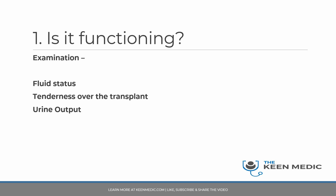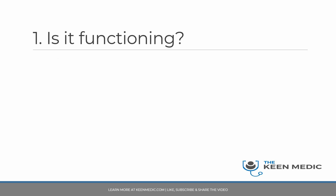Tenderness over the transplant site is also an indicator of rejection or infection. Urine output is absolutely vital for any renal patient, including those with a renal transplant. You need a clear indicator of what their urine output is — catheterizing the patient is a very good idea as it gives an accurate measure. These are the three key examination findings: fluid status, transplant site tenderness, and urine output.